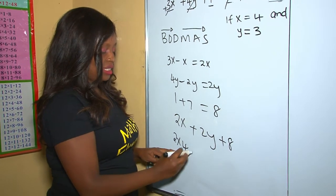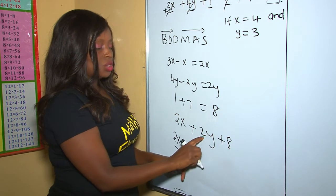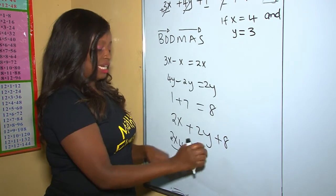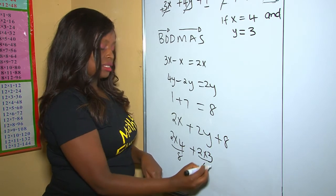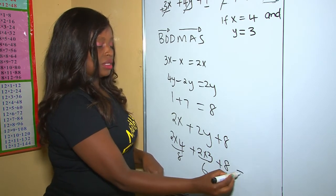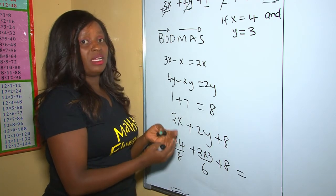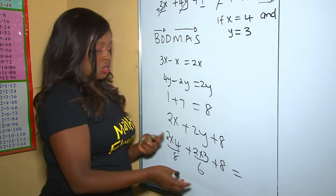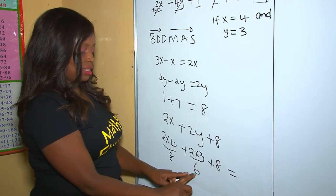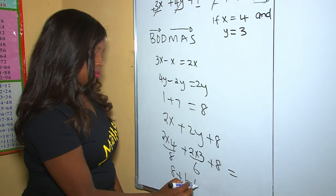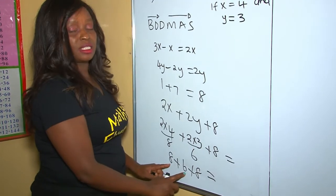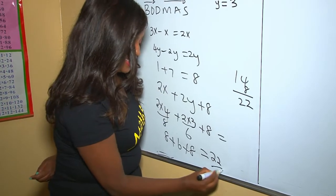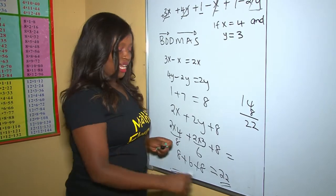2 times 4 is 8. Plus 2y — 2y means 2 times the value of y, and the value of y is 3, so 2 times 3 gives us 6. Plus 8. Now let's finish: 8 plus 6 plus 8. 8 plus 6 is 14, and 14 plus 8 is 22. So our answer is 22.